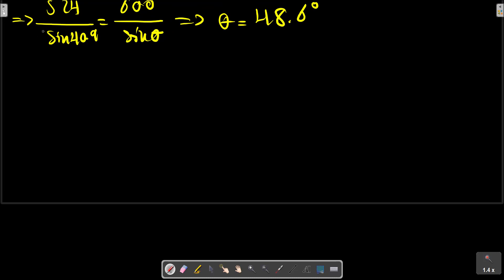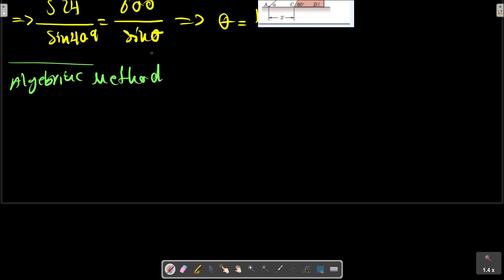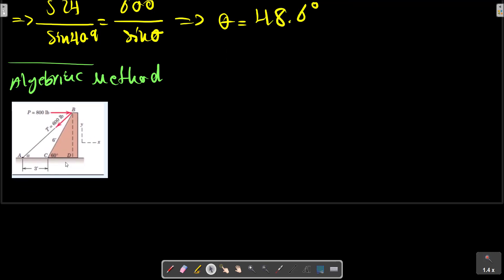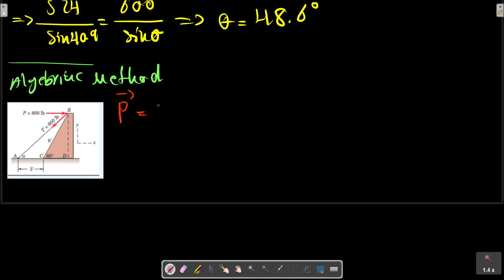Another method can be used is algebraic method. Consider this picture again. The P can be written as a vector, and T can be written as alpha plus i minus alpha j.